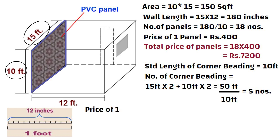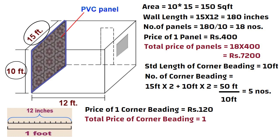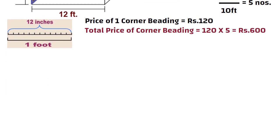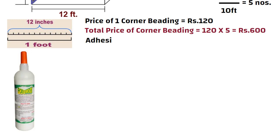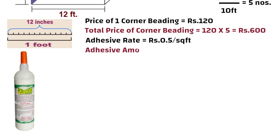The price of 1 corner putti in the market is 120 rupees, so 120 x 5 is equal to 600 rupees. The rate of adhesive for jointing PVC panels is approximately 50 paisa per square feet, so the total amount of adhesive required is 150 square feet x 50 paisa, that is 75 rupees.